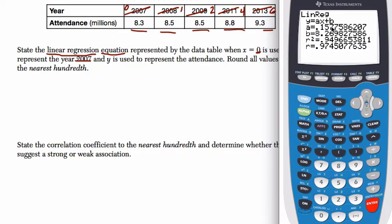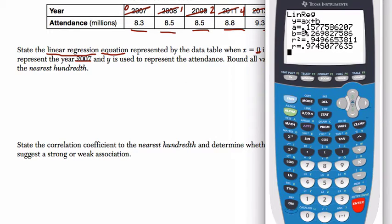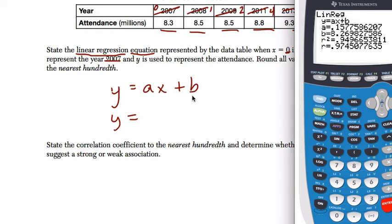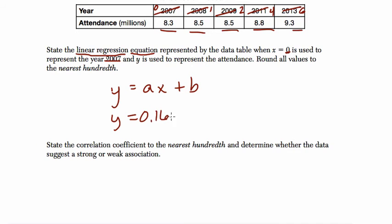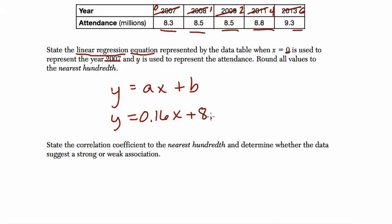The a value is 0.157..., so we have these long decimals. We want to round to the nearest hundredth, so that is 0.16. The form we're using is y equals ax plus b. So a is 0.16 times x plus b, and b is 8.27. We round that last digit to a 7 because the next digit is a 9. So the equation is y = 0.16x + 8.27.